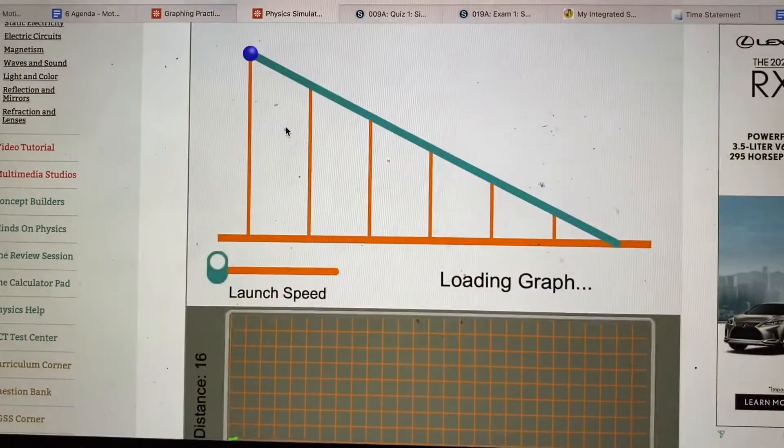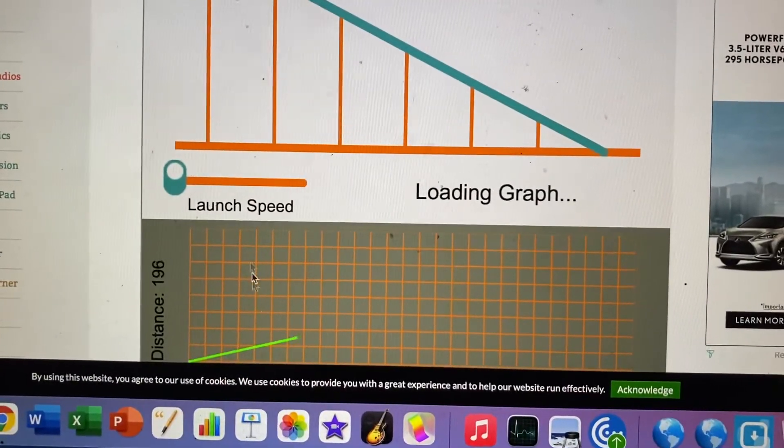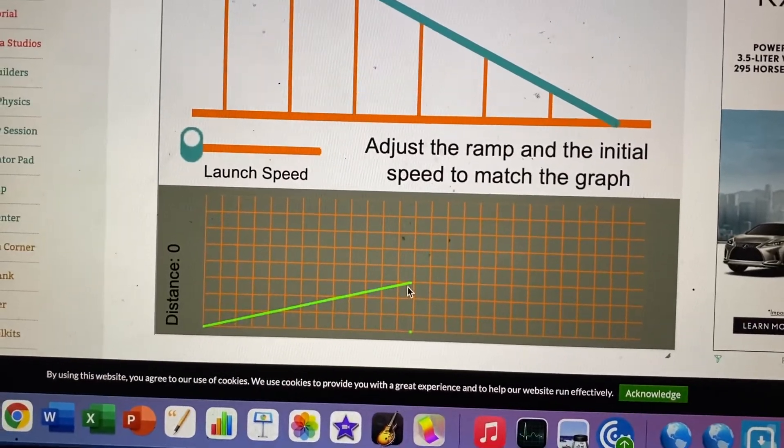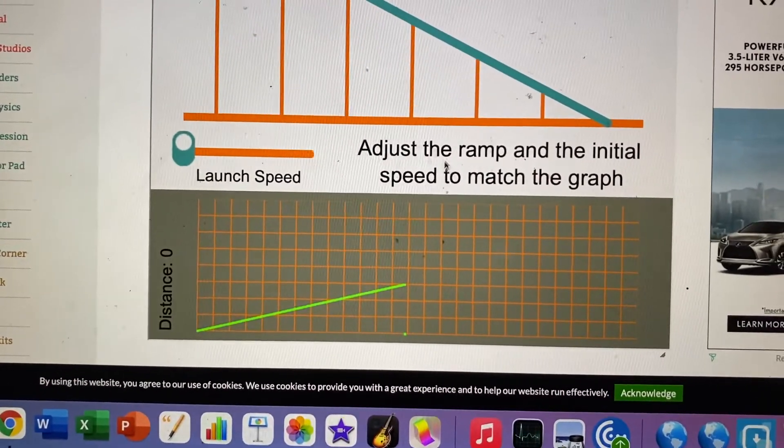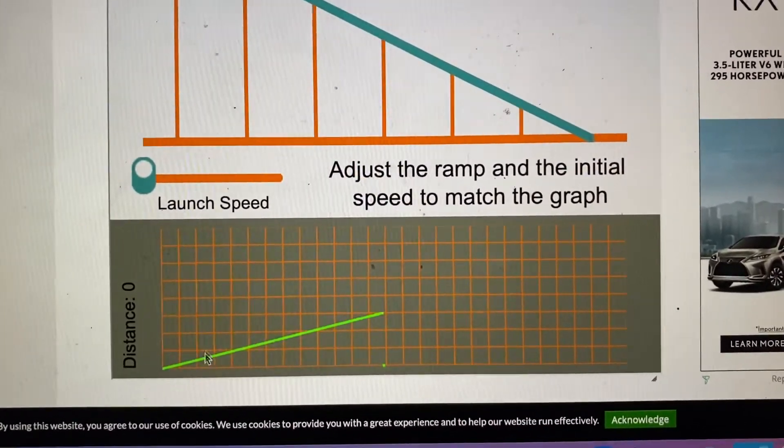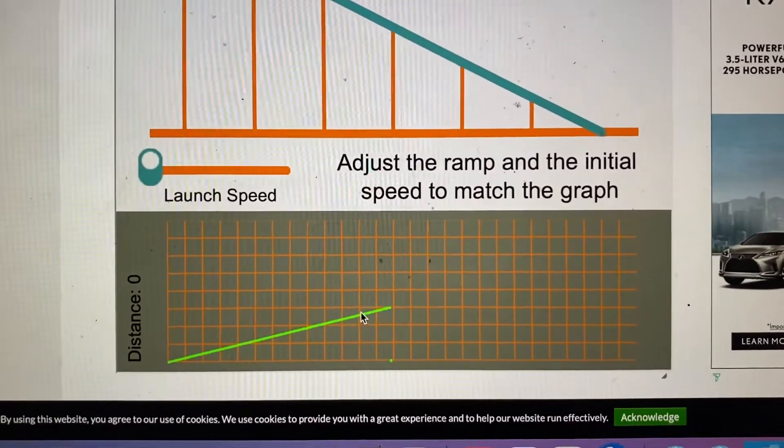Constant speed. So we get to see this. This is our target. We want to make the ball travel like this. All right, so here's our instructions. Adjust the ramp and the initial speed to match the graph. Okay, looks like this is going pretty slow, and it has a constant velocity.